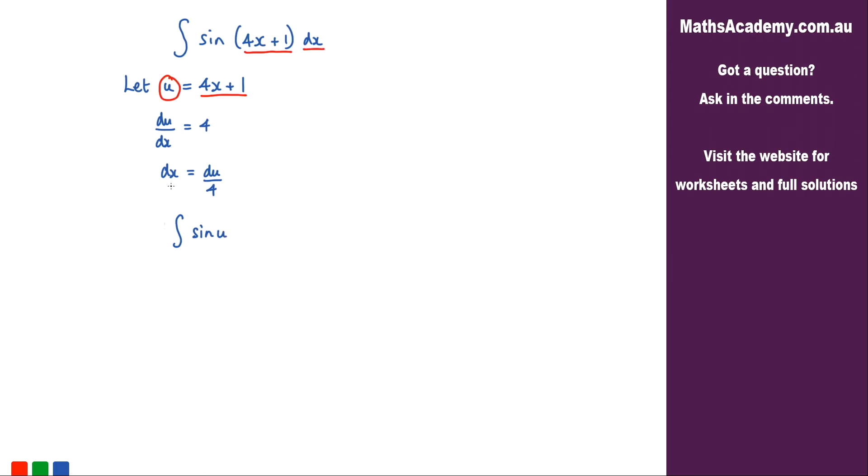And instead of dx, well dx is now equal to du over 4. So du over 4. Now that 4 is actually 1 over 4, so let's bring that outside the integral.